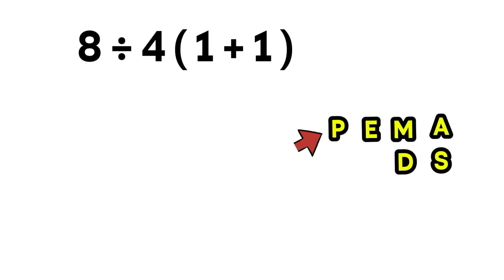So according to PEMDAS, the order is simple. Do the parentheses first, then the division, and finish with the multiplication. If we multiply before dividing, everything goes wrong.